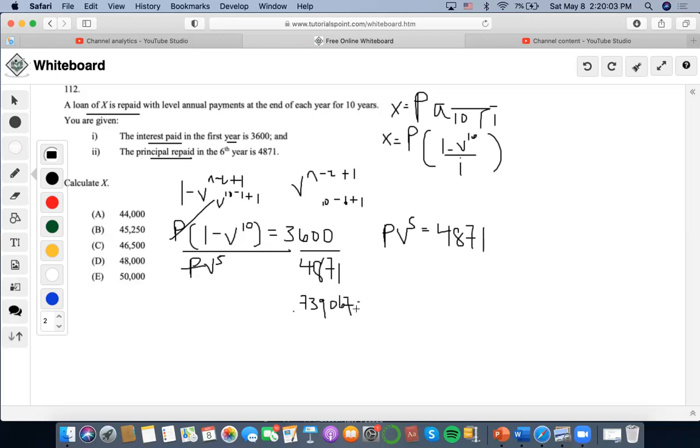...739, because remember we're trying to find i, right, to solve what X is. So now I could bring this to the other side, v to the 5. So I have these and these left, so I could form a quadratic equation. I also move this to the other side, so I have this quadratic. I could also denote v to the 5 equals x, which means that this could equal x squared plus this whole amount times x minus 1.